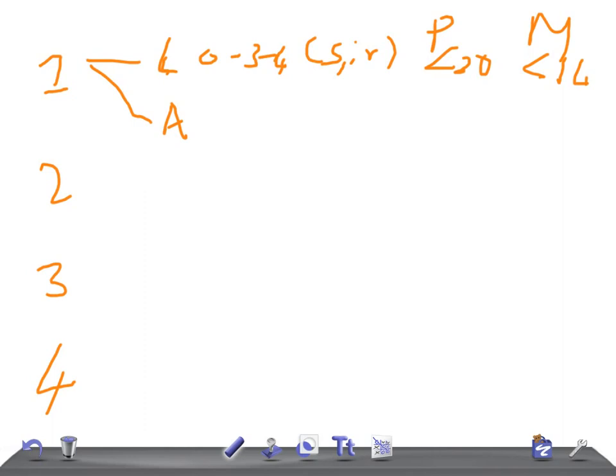Latent phase: from 0 to 3-4 cm dilation, slow and irregular. It's highly variable in primigravida and multigravida. Active phase starts from 3-4 cm of dilation to full dilation, and it's rapid and regular.